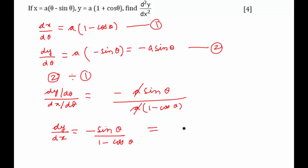This can further be written as minus 2 sin theta by 2 cos theta by 2 divided by 2 sin squared theta by 2. After cancellation, we are left with minus cot theta by 2. So this is the value of dy/dx.